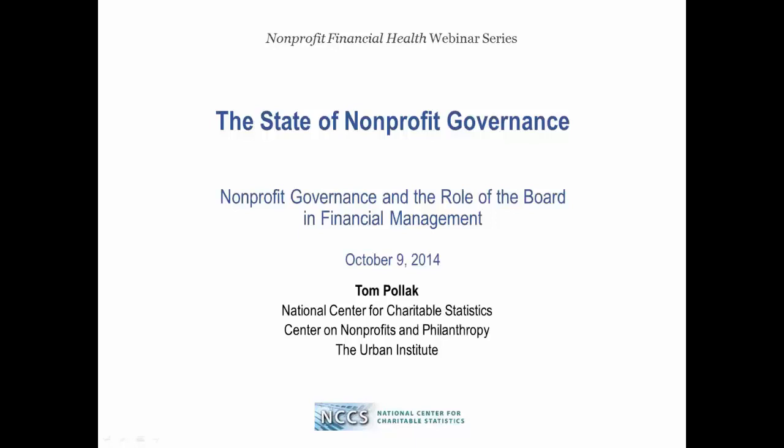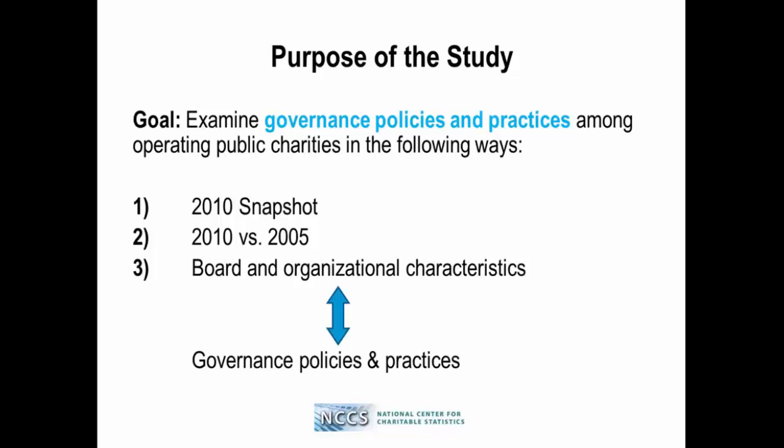The focus of this brief presentation will be on telling you about the results of a study we did using IRS Form 990 data this past year, looking at both governance practices and policies and their relationship to a variety of different factors, ranging from organizational size and activities to the independence of the boards. The focus will be primarily on looking at current practices. Our latest data was 2010 at the time this study was completed. Of particular importance here will be the theme that board and organizational characteristics are clearly intimately tied to the adoption of certain governance practices and policies.